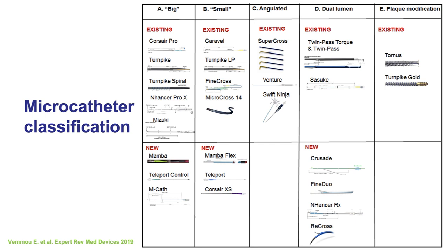In summary, microcatheters are an extremely useful tool, especially for complex percutaneous coronary interventions. Their main use is facilitating wire advancement, but they can also be used for injecting contrast and medications, as well as delivering coils and fat in case of perforation. There are five categories: large outer diameter, smaller outer diameter, angulated, dual-lumen, and plaque modification microcatheters. It is best to have at least one from each category present in the cath lab.